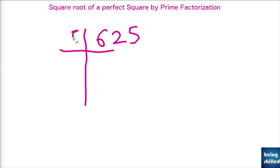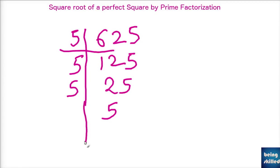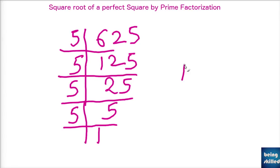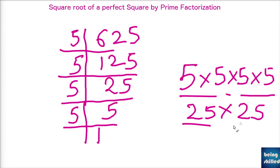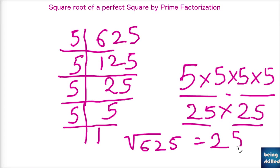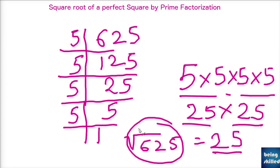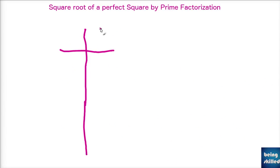Now let's try 625. Divide by 5 to get 125, again by 5 to get 25, again by 5 to get 5, and again by 5 to get 1. We got four fives, which form two pairs of 5 × 5 = 25. So √625 = 25. Twenty-five is the square root of the perfect square 625.